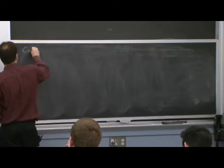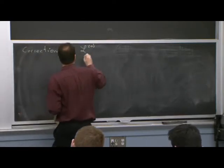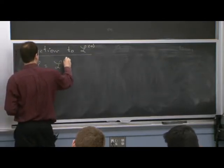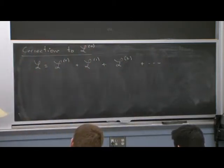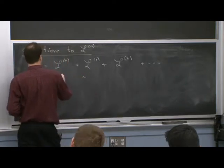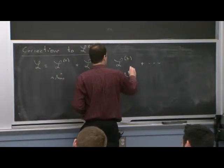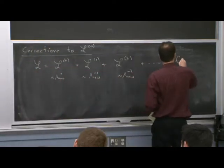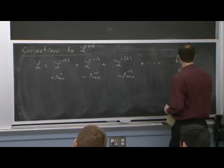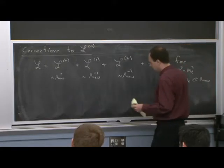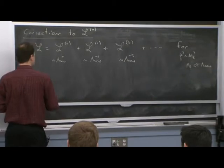Our notation indexes the Lagrangian as a series. L0 has no powers of lambda_nu, L1 has one inverse power, L2 has two inverse powers, et cetera. We want to think about using this for some p — which could be of order m-top-squared — much less than lambda_nu. So let's think about how to construct L1 and L2.